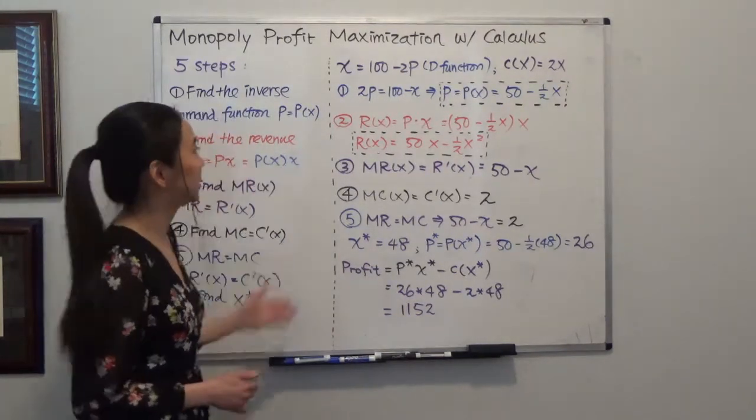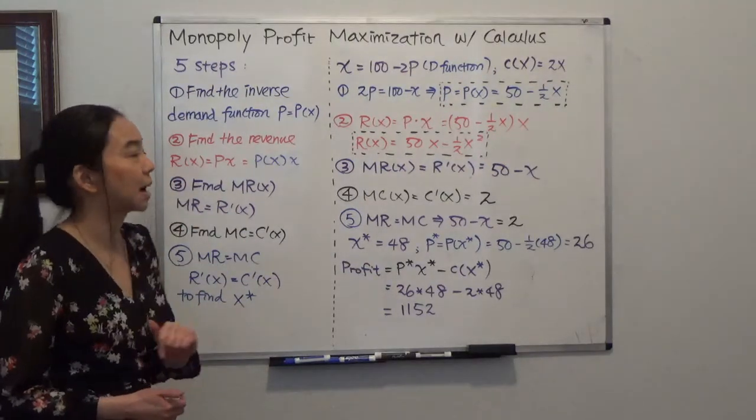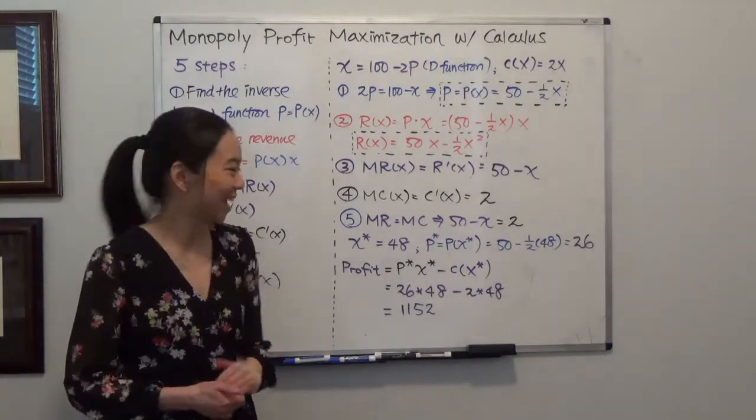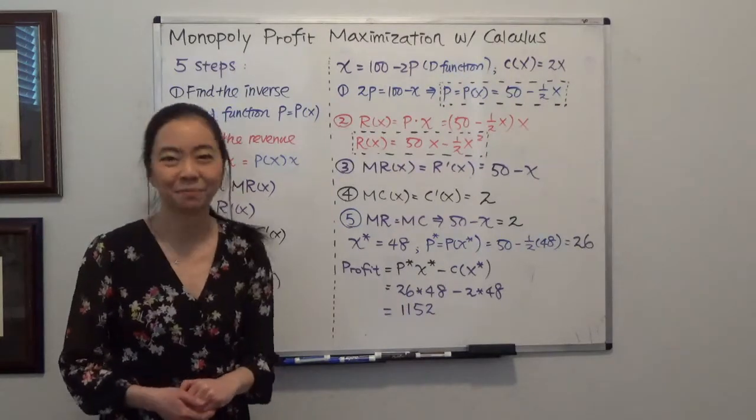So this is how we use five steps to solve a monopoly profit maximization problem. I hope this helps — we'll see you next time.